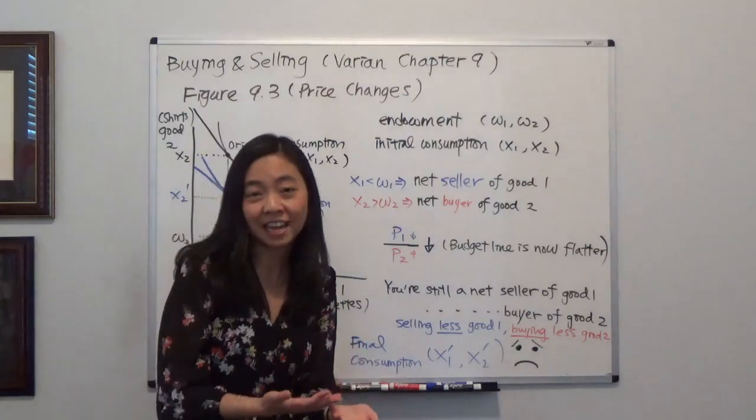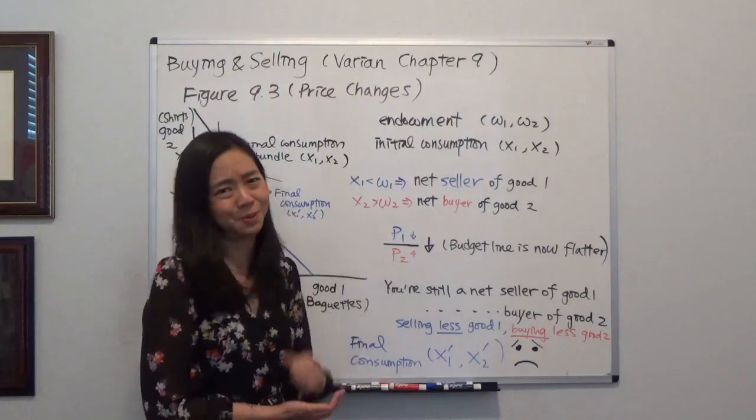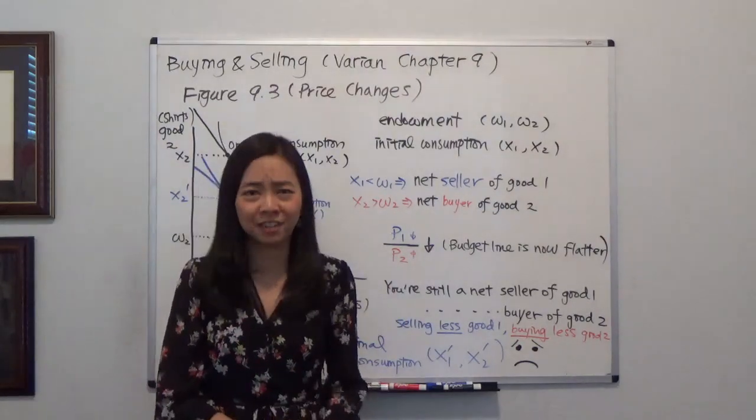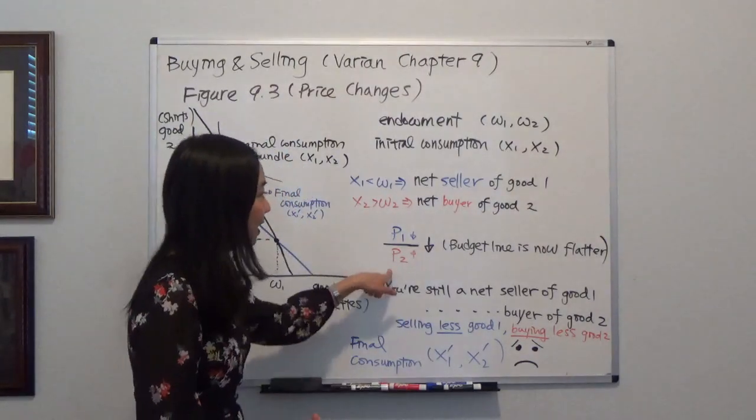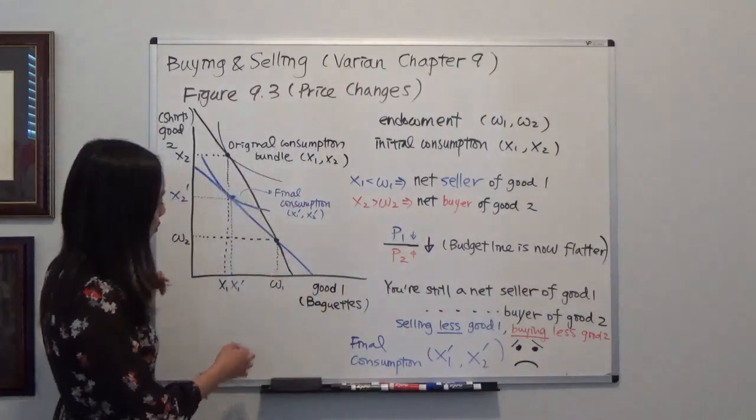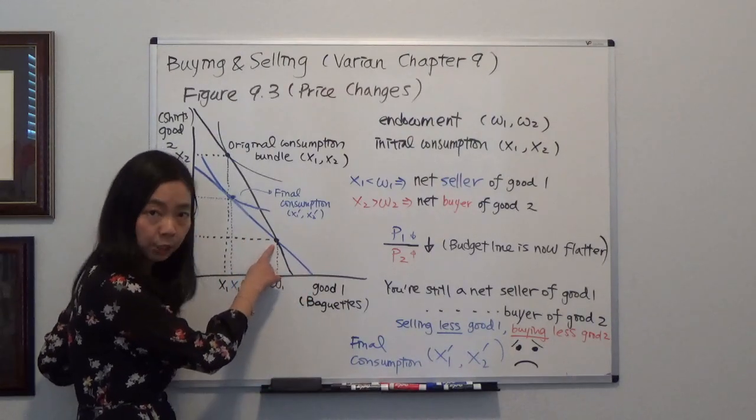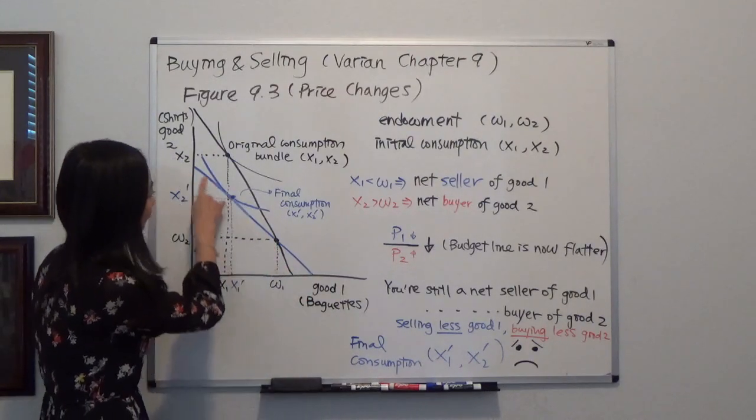It could be the price of the baguettes goes down. So the things you're selling, they're just not that valuable anymore. And the things you want to buy becomes more expensive. So you're out of luck. In that case, your budget line is going to become flatter. And notice that your new budget line is the blue line. It still has to go through your initial endowment.